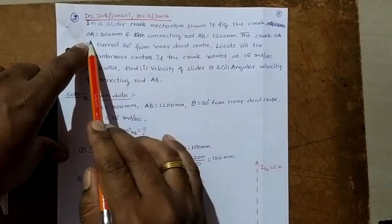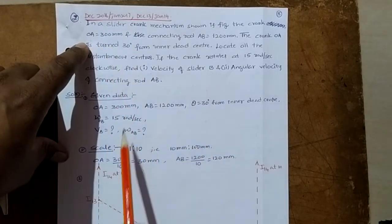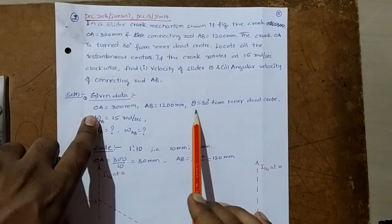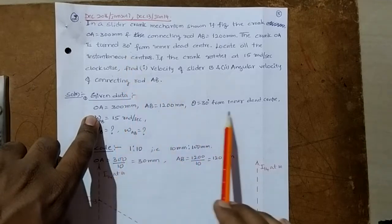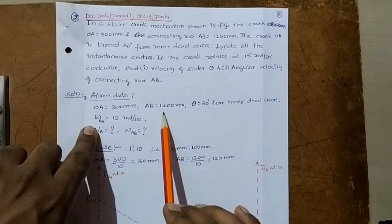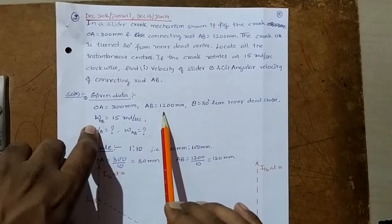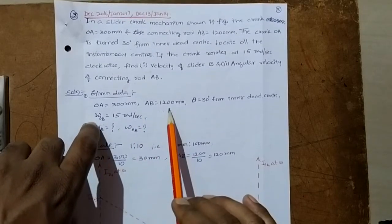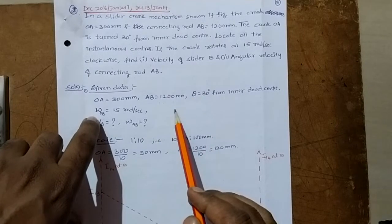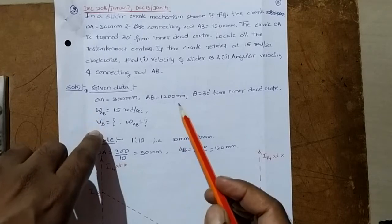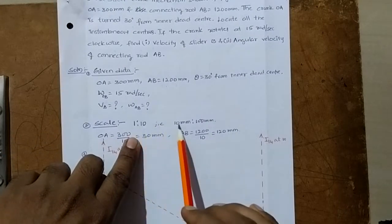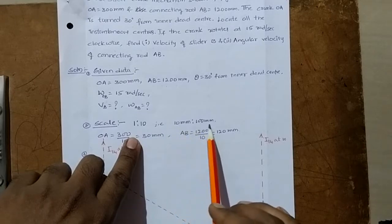The length of links are given. OA is equal to 300 mm and AB is equal to 1200 mm. Angle theta is given as 30 degrees from the inner dead center. The maximum value is 1200 mm, which is not possible to draw on paper. So I will take the scale of 1 is to 10, that is 10 mm is equal to 100 mm.